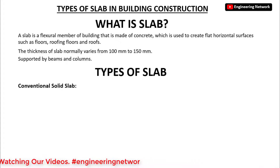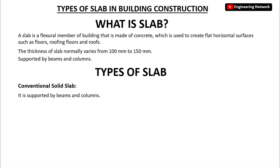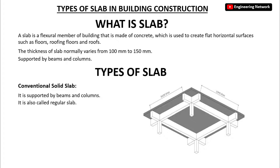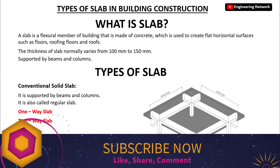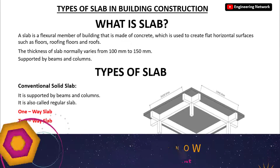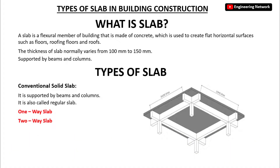The first type is the conventional solid slab. This type of slab is supported by beams and columns and is also called a regular slab, as you can see on your screen. Mostly this conventional solid slab is used in buildings. Conventional solid slabs are further divided into one-way slab and two-way slab. I have already uploaded a detailed video about one-way slab and two-way slab, so if you are interested, please watch that video on my YouTube channel, and you will also find the link in the description of this video.